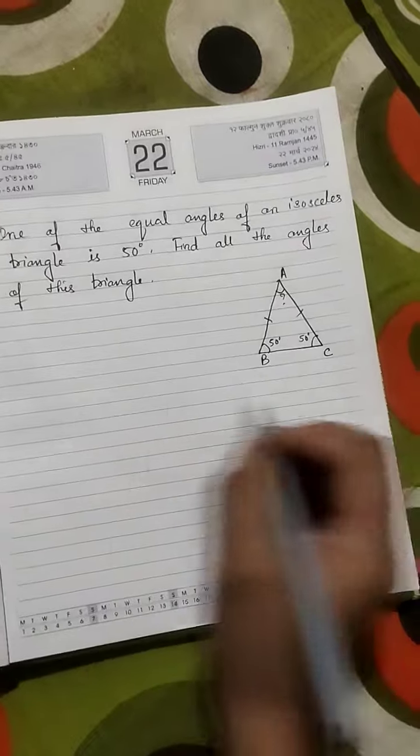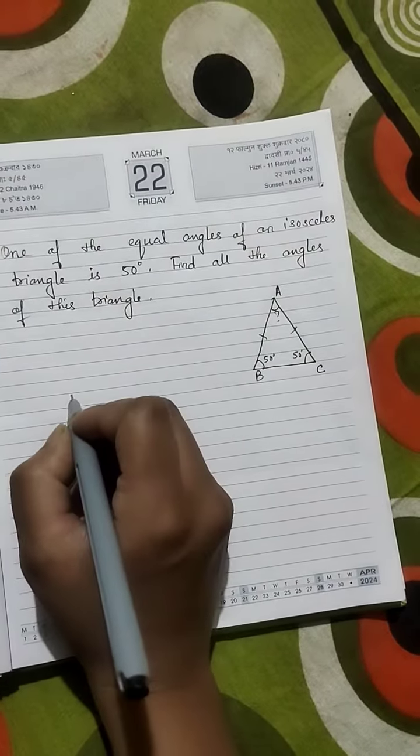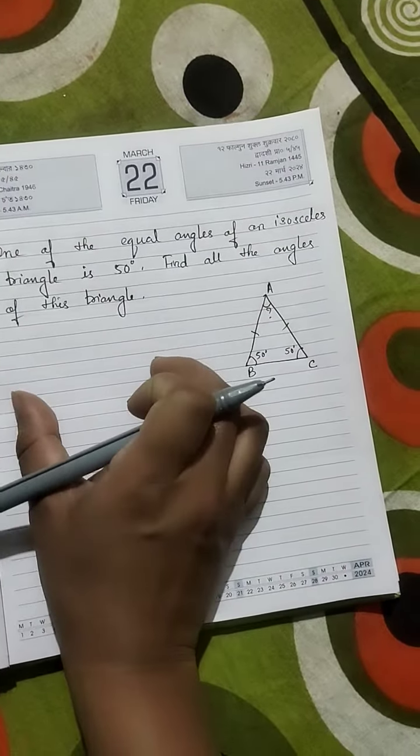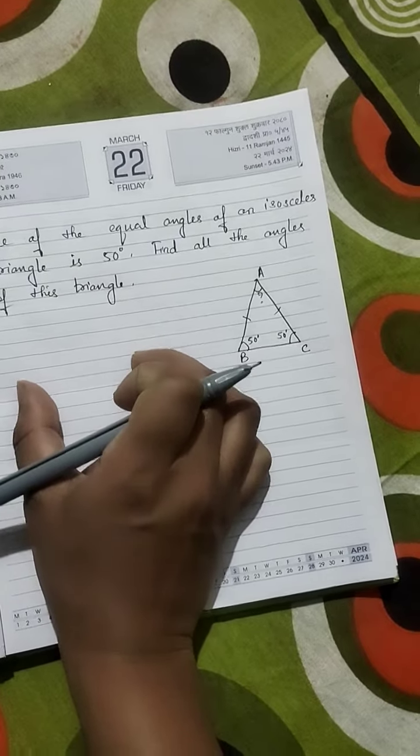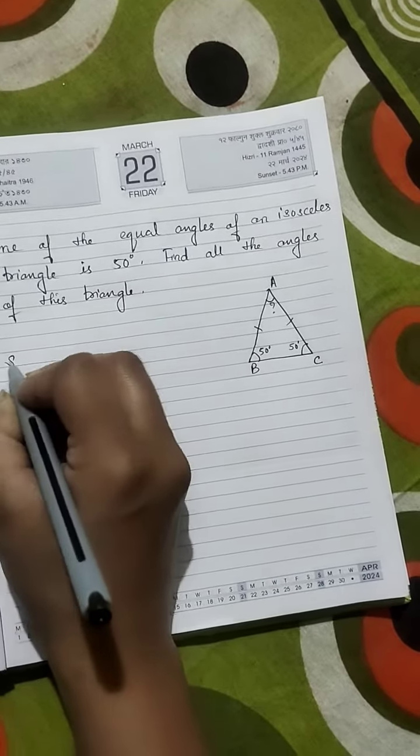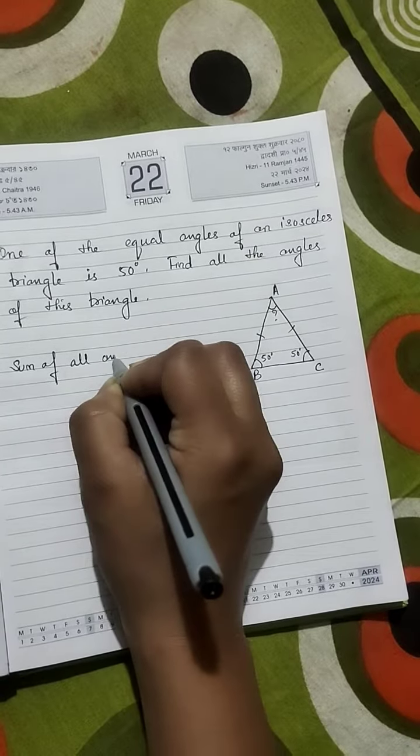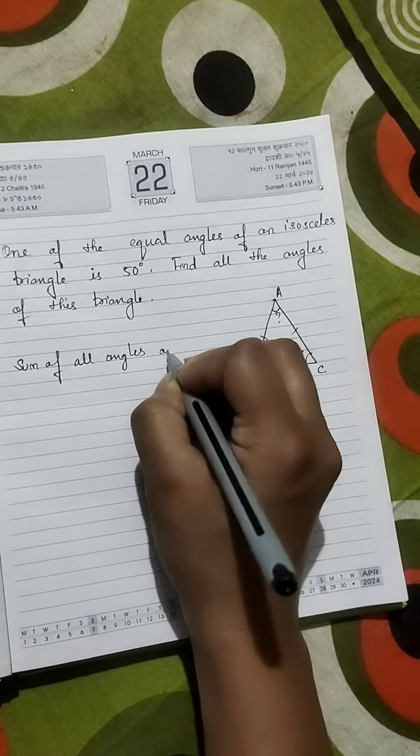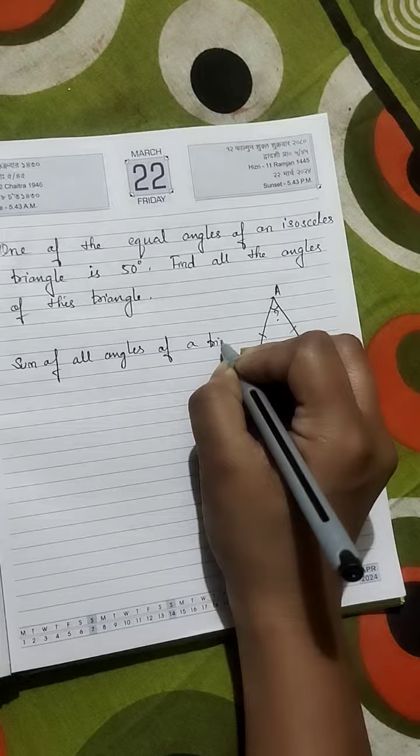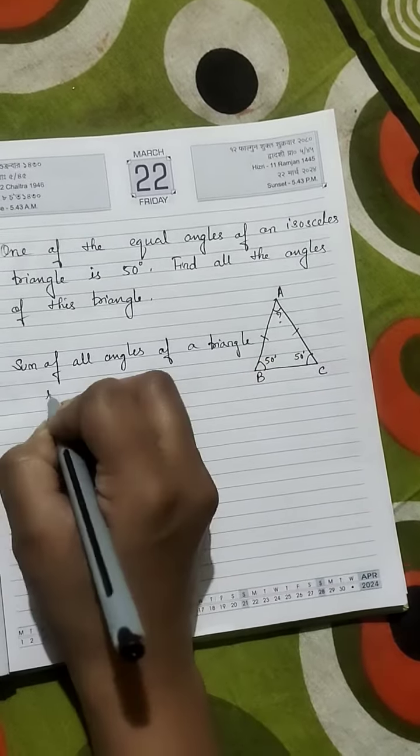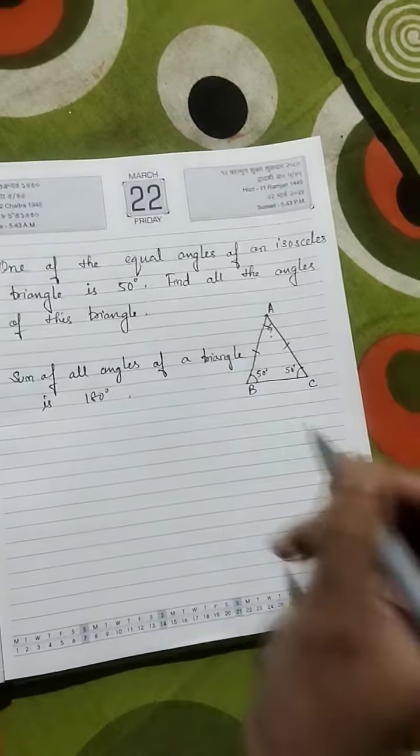We know that the sum of the three angles of a triangle is 180 degrees. So sum of all angles of a triangle is 180 degrees.